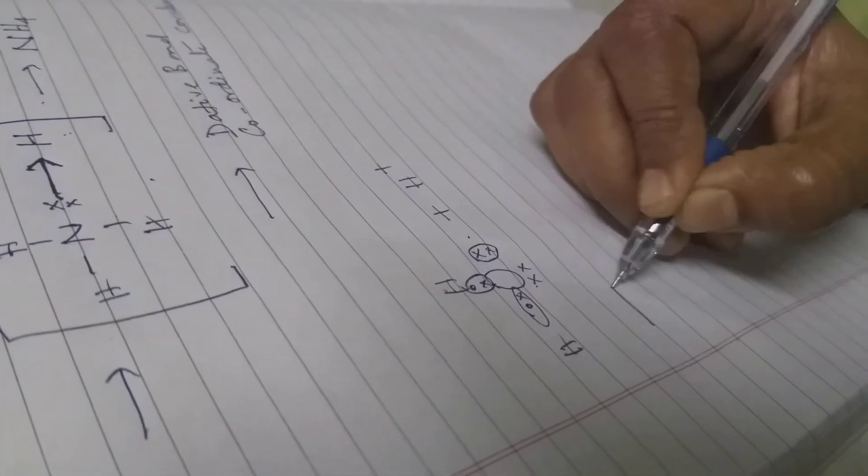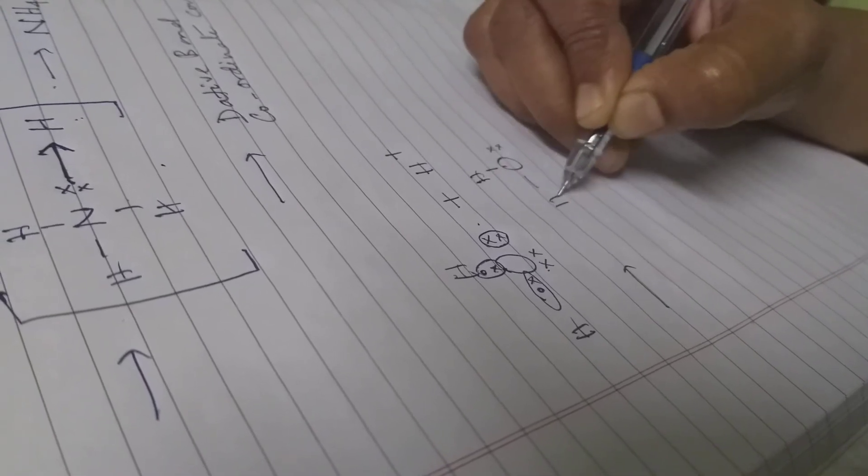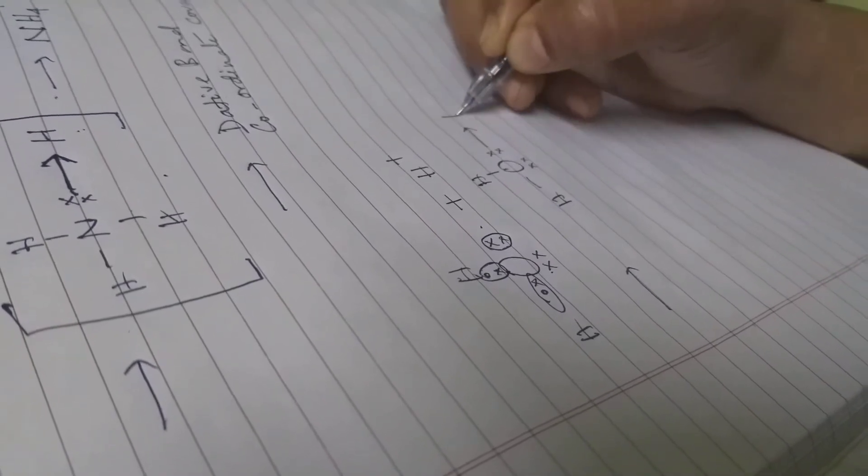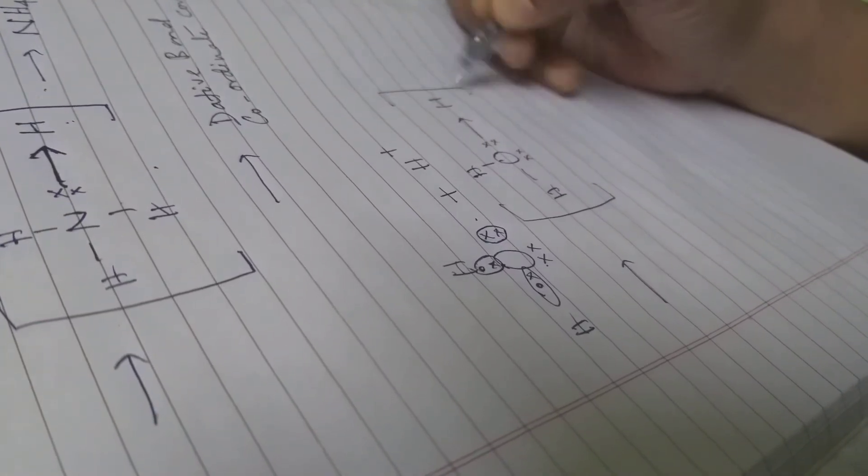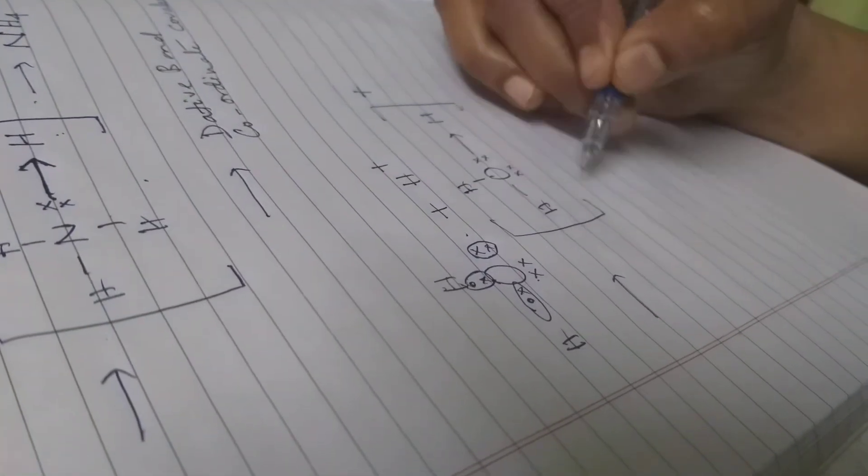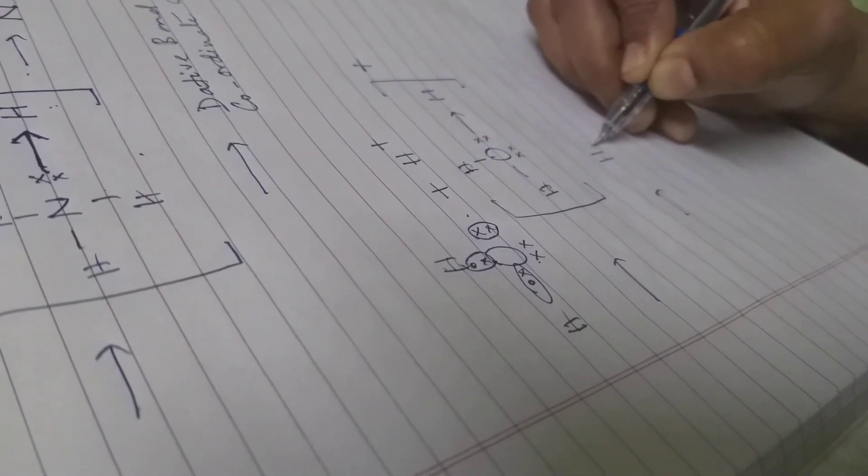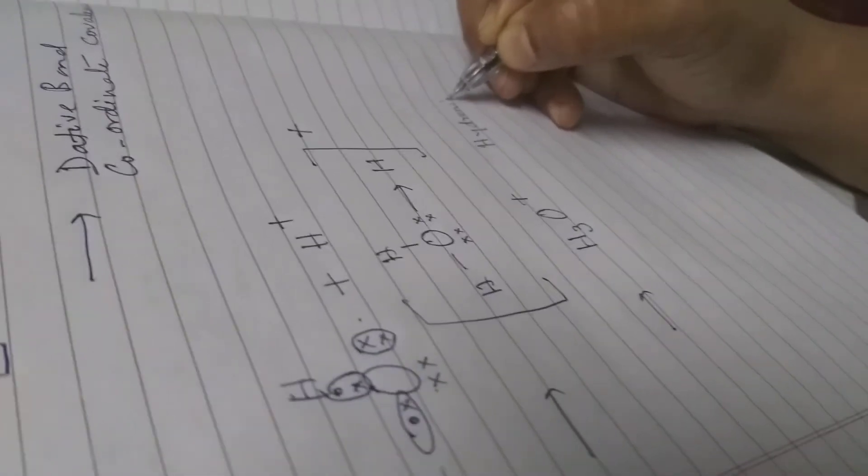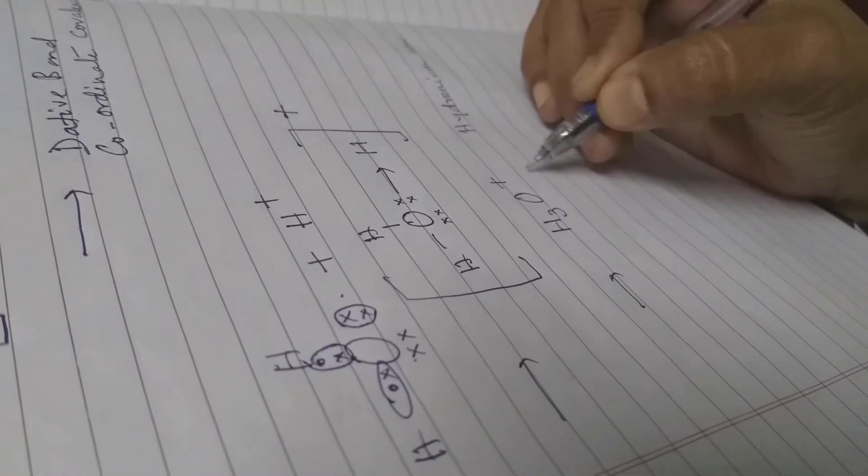You will find that oxygen, here is my water H2O, these are the pairs. This pair is being given to this proton. Again this charge will be balanced to give stability to the entire radical and this is now formed H3O+, this is called a hydronium ion.